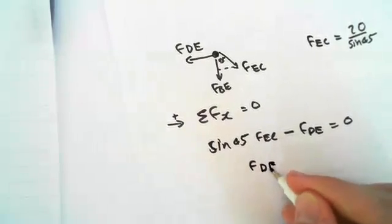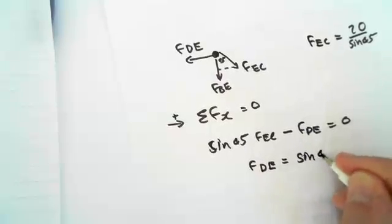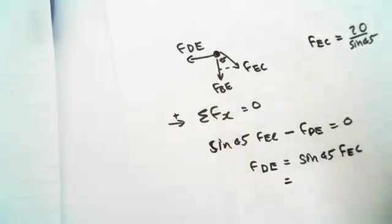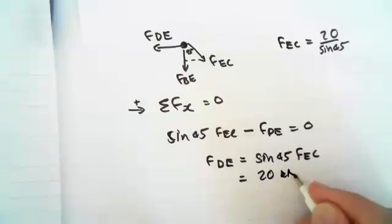FDE equals sine 45 FEC. Which equals, we can see from up here, that the sine 45's just cancelled, which equals 20 kilonewtons.